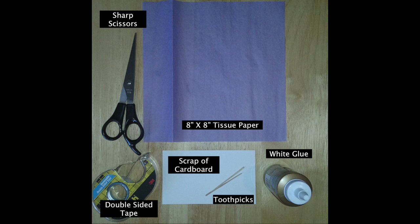To make this Waldorf star, you're going to need an 8 by 8 inch square of tissue paper of any color, a bottle of white glue, a scrap of cardboard or an index card, and a few toothpicks, some sharp scissors, and a roll of double-sided tape.